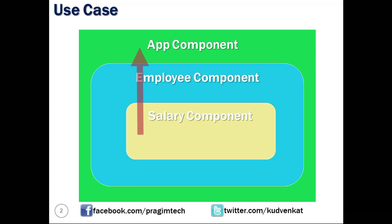Now, what if we want to update the employee salary in the salary component, or update the employee data from any of the child components, and we want that update to be visible in all the remaining components of the tree? Let's see how to do that. Let's open the index.js file from our demo project.